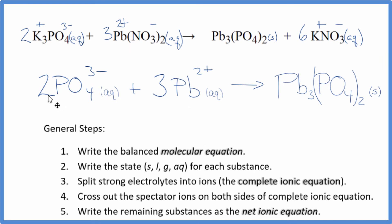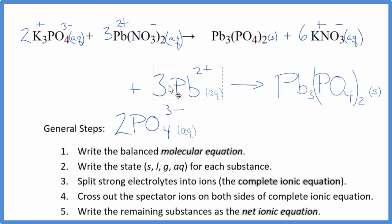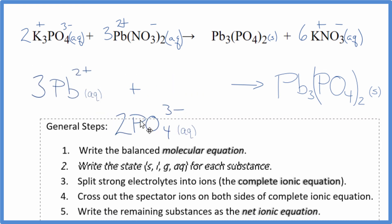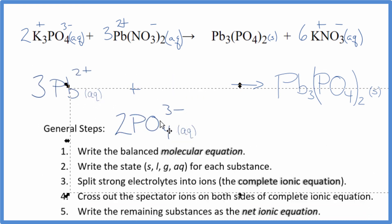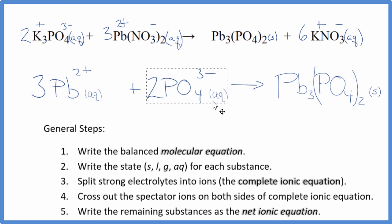This is the balanced net ionic equation for potassium phosphate plus lead-2 nitrate. You can see charge is balanced: 2 times 3 minus gives 6 minus, and 3 times 2 plus gives 6 plus — those add up to 0. Over here we have a neutral compound, and the atoms are balanced as well. Often you'll see the positive ion put first; it doesn't really matter, maybe it looks a little nicer. This is Dr. B with the balanced net ionic equation for K3PO4 plus Pb(NO3)2. Thanks for watching.